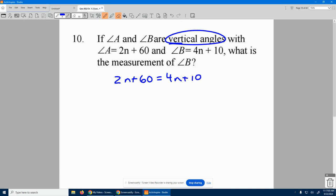So I'm going to have to solve for n here. So I take away 2n from both sides. I get 60 is equal to 2n plus 10. Now move your number over to be with the other number. 2n is 50.